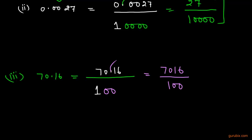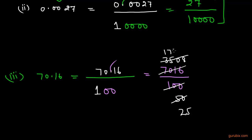Now we cancel 100 by 2 to get 50, and 7,016 by 2 to get 3,508. We cancel again: 50 by 2 to get 25, and 3,508 by 2 to get 1,754. So the final answer is 1,754 over 25. This is the P by Q form of the decimal number 70.16. This is all about how to convert a terminating decimal expansion into P by Q form. Thank you.